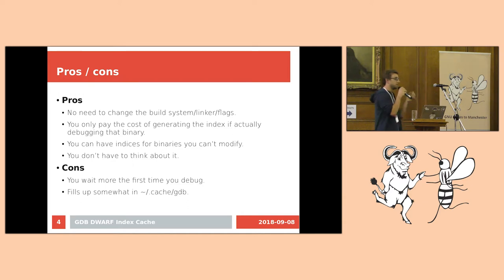You can also have indexes for the binaries you can't modify. So let's say you have binaries generated on some server that you mount, and they have debug symbols, and they don't have an index. Well, you could not add one normally if you don't have permissions, but with this method, this isn't in your home directory.